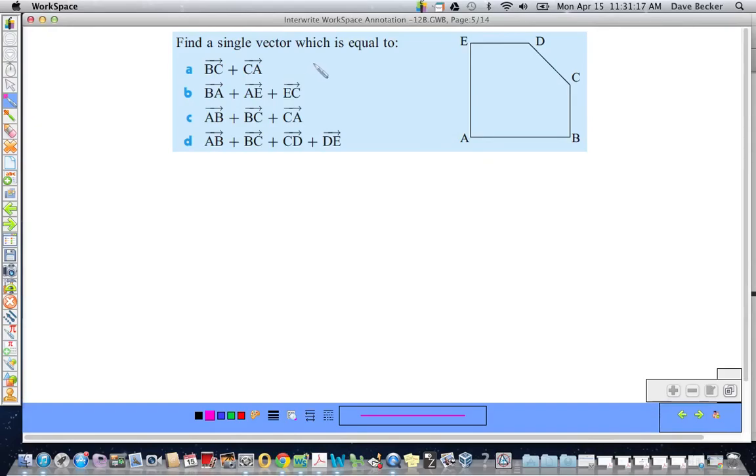Okay. Now, find a single vector which is equal to BC plus CA. It's very, very simple. Okay. Basically, I'm starting at B and I'm ending at A.